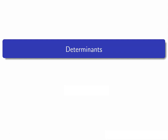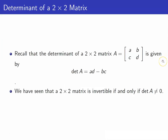In this lesson we are going to talk about determinants. Recall that in our previous lecture we defined the determinant of a 2x2 matrix to be AD minus BC. We have seen also that a 2x2 matrix is invertible if and only if its determinant is non-zero. What we want to do in this lecture is to define the determinant of any square matrix, and we will also see that the matrix is invertible if and only if its determinant is non-zero — meaning we can generalize this statement for any square matrix.